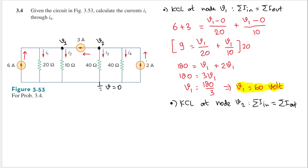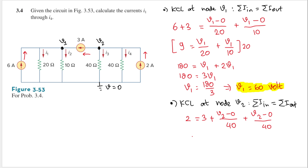The only current going in is from this current source, which is 2 amperes. All other currents are going out: 3 amperes from this branch, plus (V2 minus 0) divided by 40 ohms for this branch, and also (V2 minus 0) divided by 40 ohms for this one.